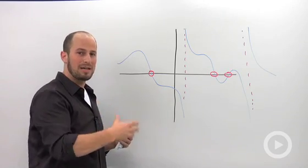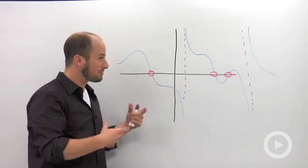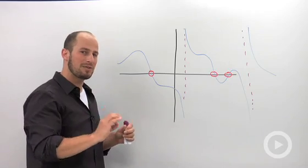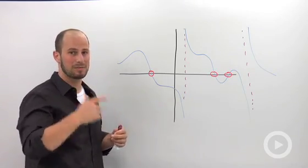So that's going to be the key step in solving rational expression inequalities, is knowing that the only place we're going to change from positive to negative is at zeros or asymptotes.